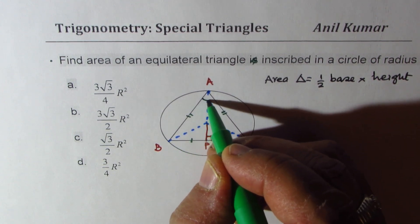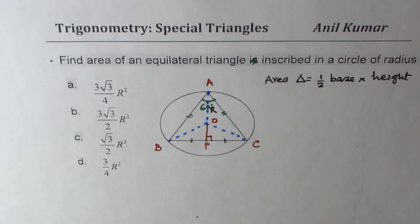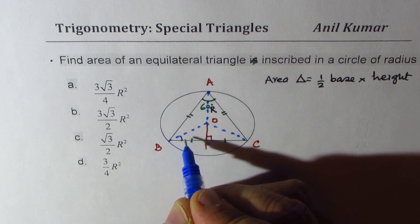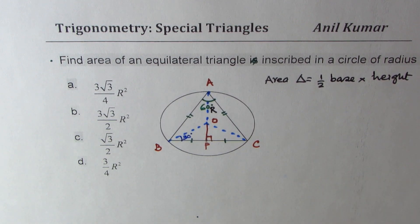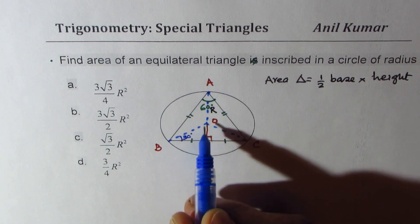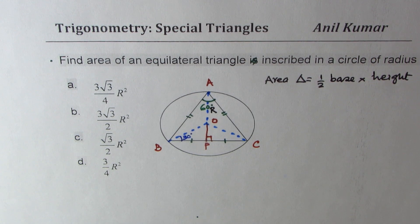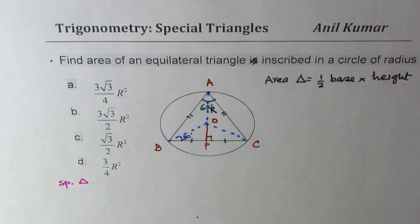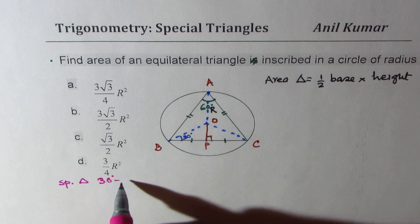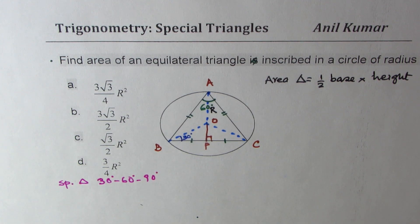How do we find the side of the triangle? We know that the total angle here is 60 degrees, so each base angle is going to be 30 degrees. These angles are 30 degrees, so what we have here is a 30-60-90 triangle. We can solve this using the 30-60-90 special triangle.